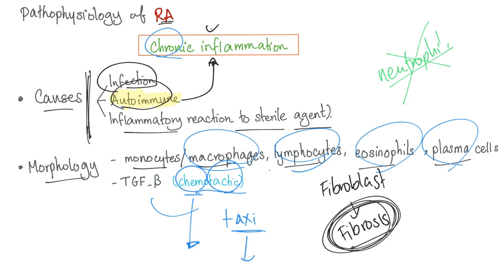But what about anti-fibrogenic medications? Anti-fibrogenic therapy, such as pirfenidone, prevents fibrosis from happening — because prevention is better than cure when there is no cure. These drugs do not reverse fibrosis; they only prevent it. Big difference. That's why scars leave a mark.